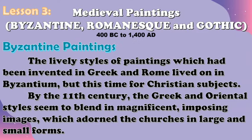The last lesson in this module is about the Byzantine, Romanesque, and Gothic art periods. In Byzantine art, the lively styles of painting invented in Greece and Rome lived on in Byzantium, but this time for Christian subjects. By the 11th century, Greek and Oriental styles blended into magnificent, imposing images which adorned churches in large and small forms.